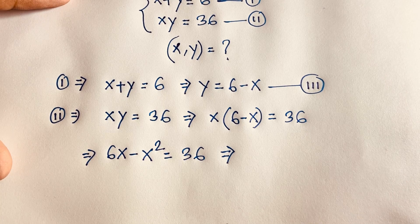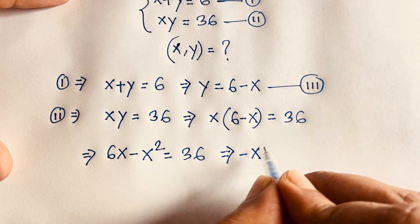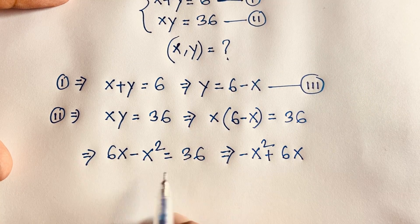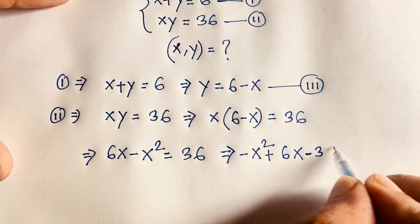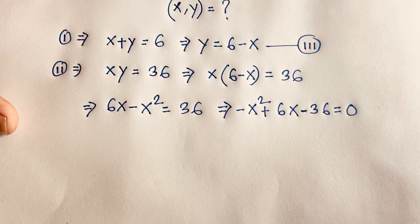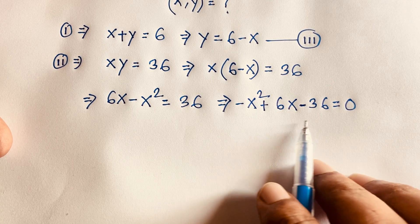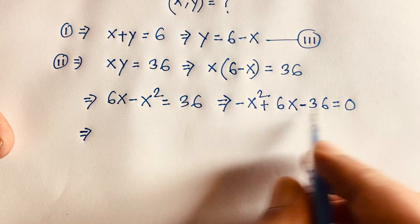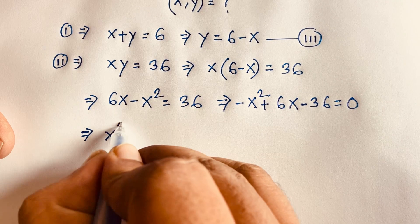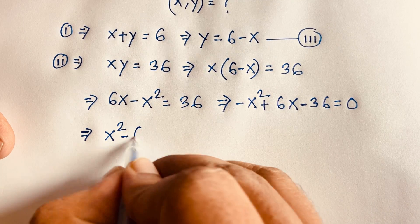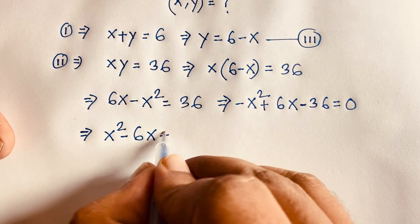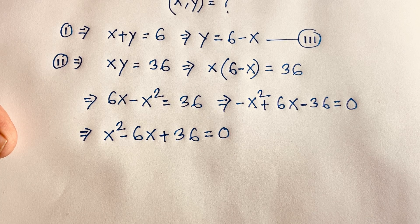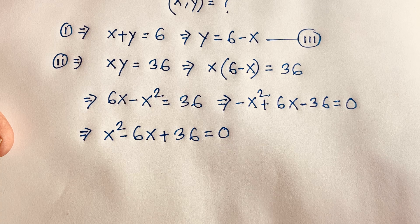Then this equation becomes: minus x squared plus 6x minus 36 is equal to 0. So I multiply both sides by minus 1, and we find the quadratic equation: x squared minus 6x plus 36 is equal to 0.